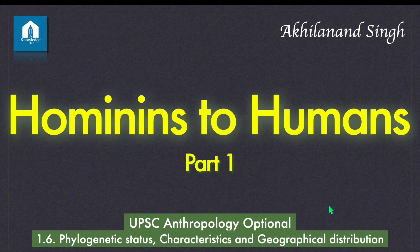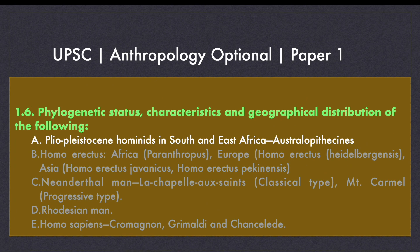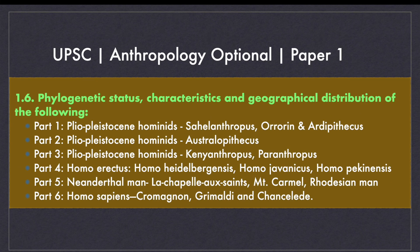Hi friends, this is Akhil Anand Singh. Welcome to the first part of the series named Hominins to Humans. In this 6-part video series, we will go through a human evolution journey spanning 7 million years. On your screen, you are seeing the syllabus of UPSC Anthropology paper 1. In this first part, we are going to learn about 3 genera named Sahelanthropus, Ororin and Ardipithecus. This part combined with the remaining five parts will cover all the requirements of topic 1.6.